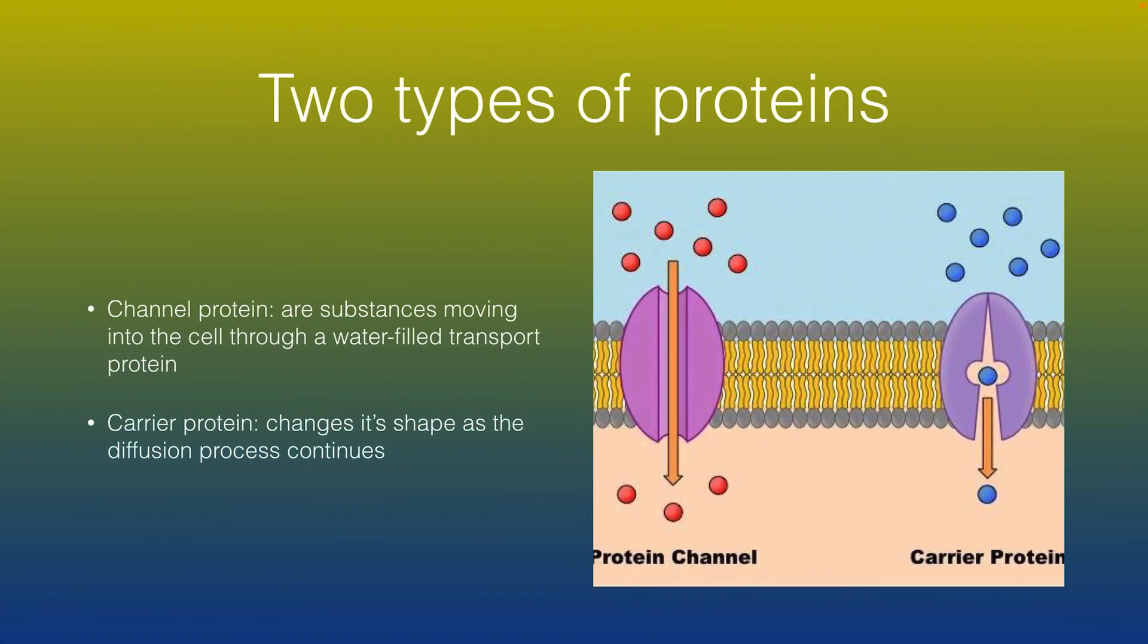And there are two types of proteins: channel protein and carrier protein. Channel proteins are substances moving into the cell through a water-filled transport protein, and carrier protein changes its shape as the diffusion process continues.